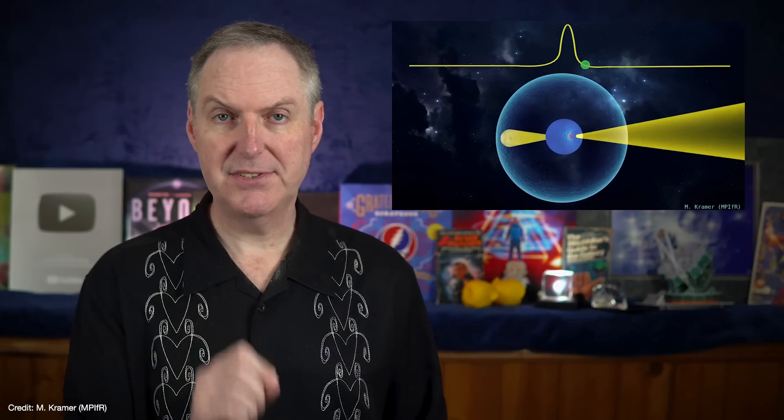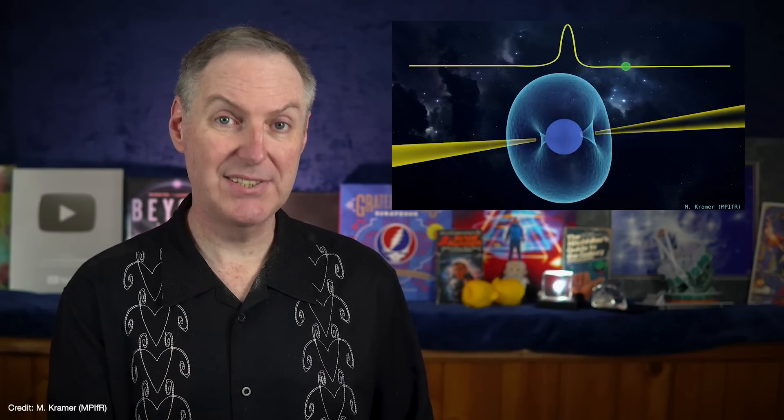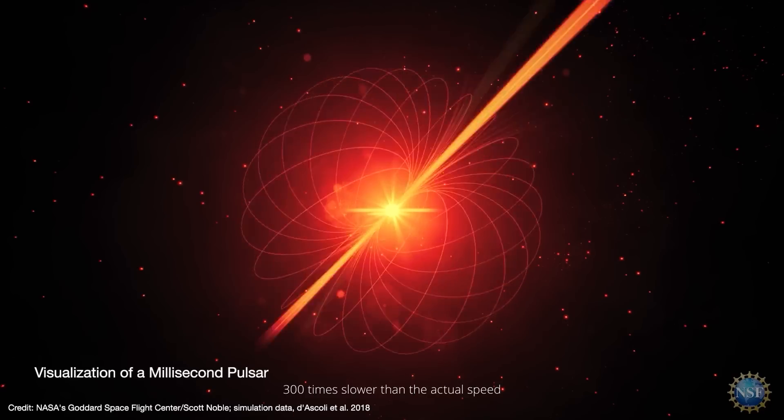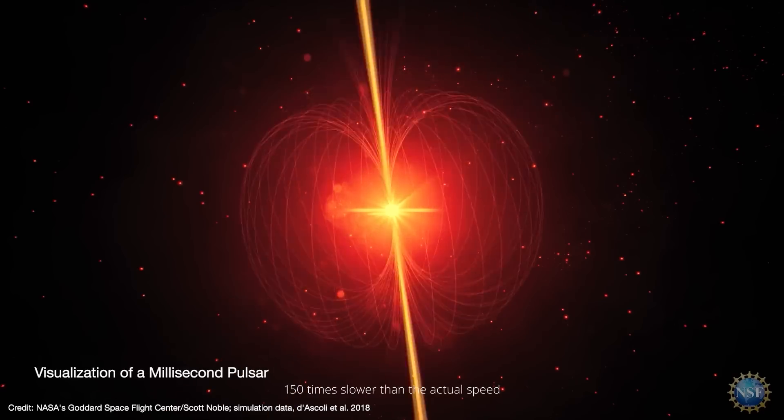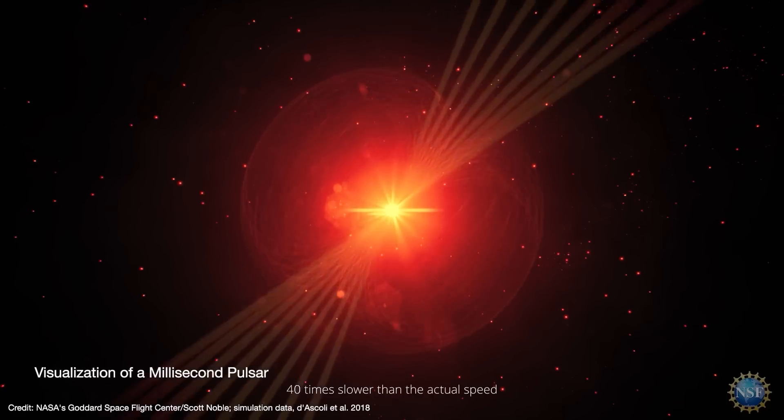But the fastest spinning pulsars complete their rotation in just a few milliseconds. And these so-called millisecond pulsars can spin up to hundreds of times each second. That makes millisecond pulsars extremely stable, with accuracies approaching that of atomic clocks. That means you can take one of these pulsars and predict the arrival time of a particular tick several years before it arrives, and you'd still be accurate to within one ten millionth of a second.